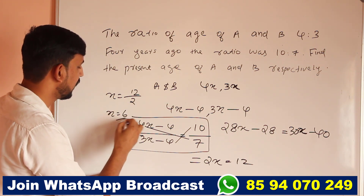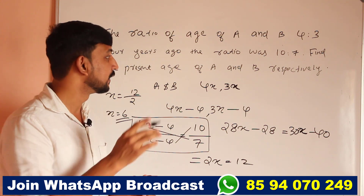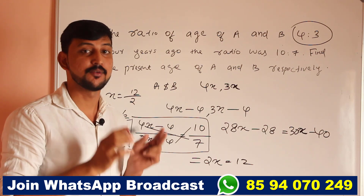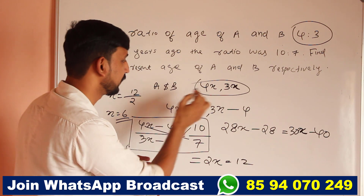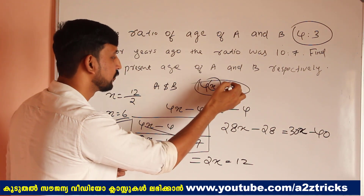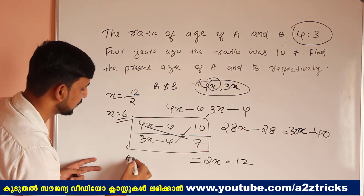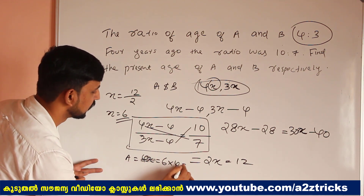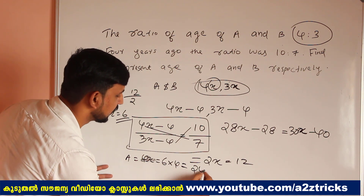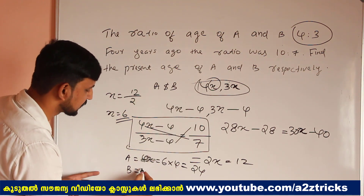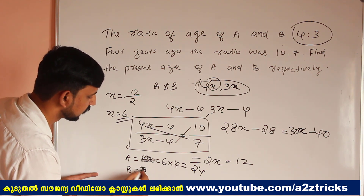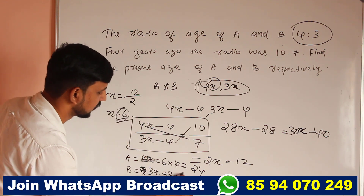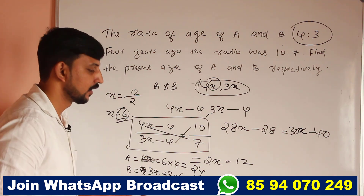Now x is equal to 12. We can give that value to 4x and 3x. For A, 4x gives us 4 times 6 equals 24. For B, 3x gives us 3 times 6 equals 18. So the present ages of A and B are 24 and 18 respectively.